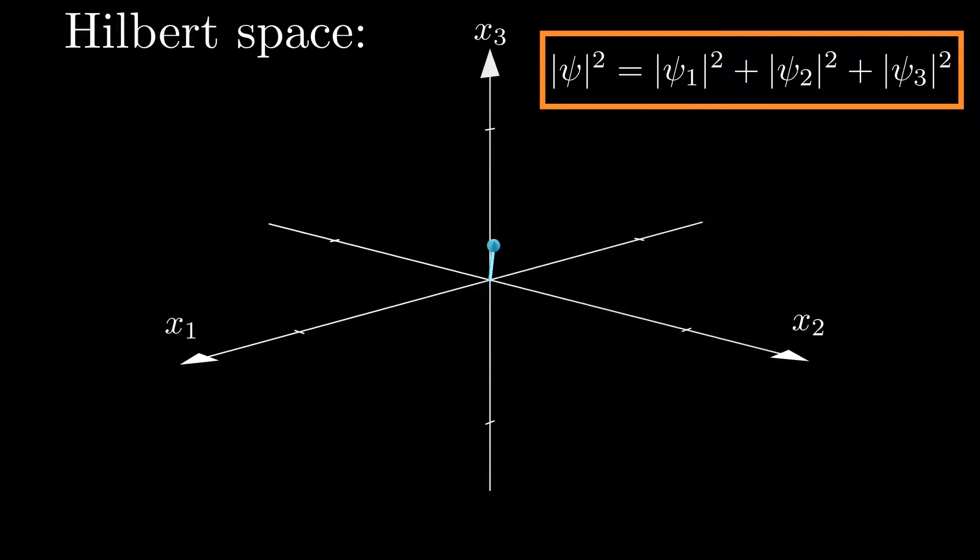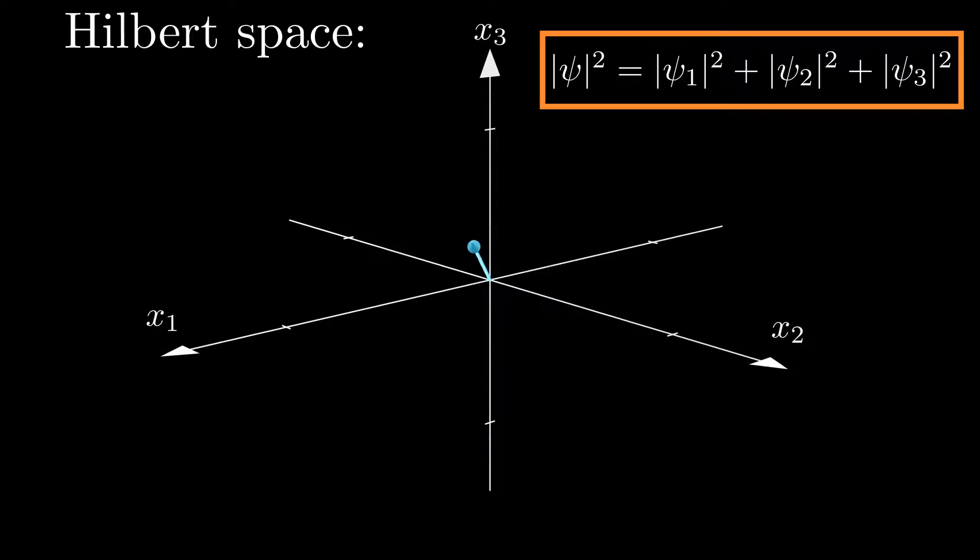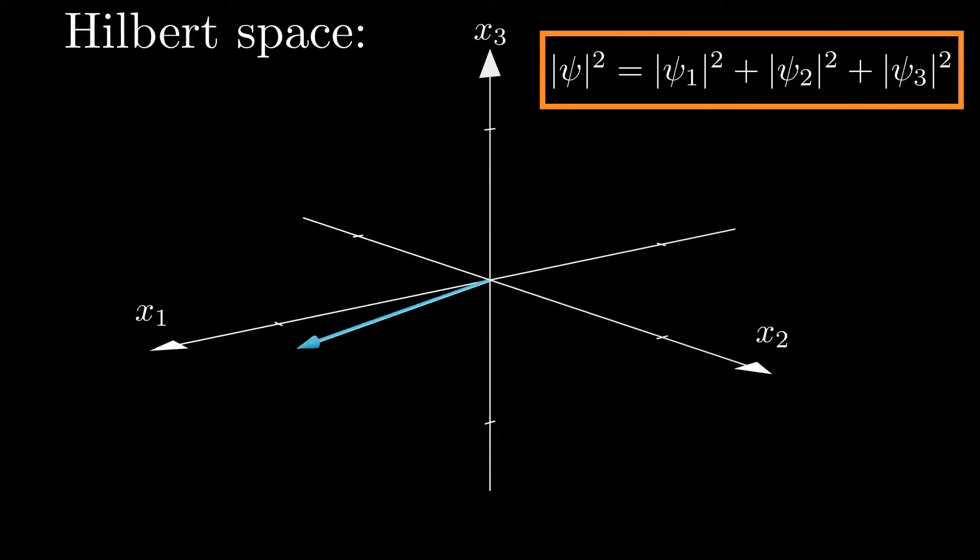With this mathematical setup out of the way, let us take a look at some examples. If we know the particle is at position x1, the vector will be pointing along the x1 direction. If the particle is in some kind of superposition between the three spatial coordinates, the vector will point along all three spatial directions in some way.